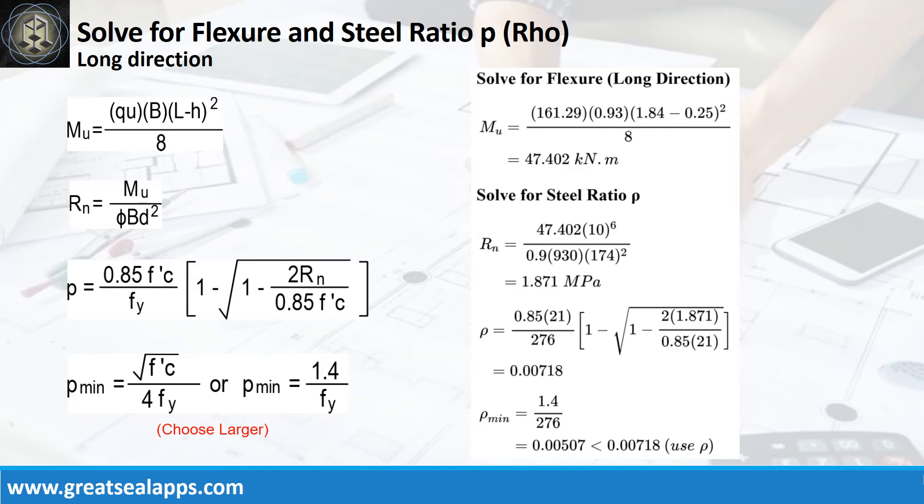Given resistance factor equals 0.9, B equals 930mm, and D equals 174mm, the beam design ratio Rn equals 1.871 MPa and reinforcement ratio Rho equals 0.00718.